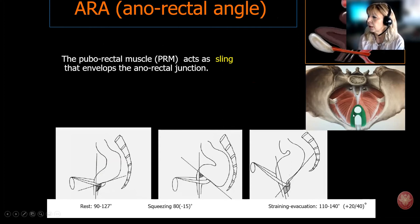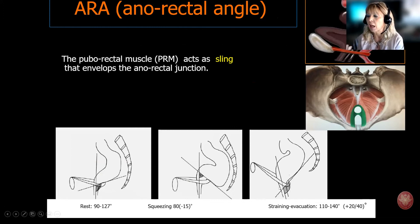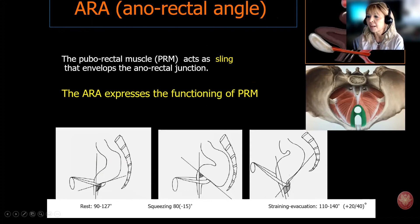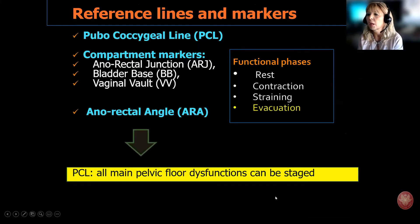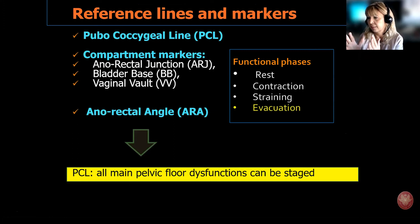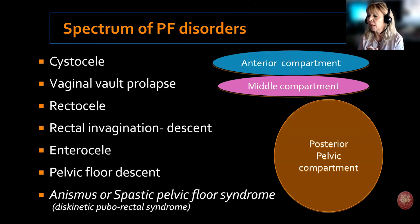Let me spend a few words on the anorectal angle, which is placed between the posterior wall of the rectum and the central axis of the anal canal, and is very easily drawn on MRI images. At rest it is 90 degrees. It is important because it expresses the functioning of the puborectal muscle — a sling that envelops the anorectal junction. Its tonic contraction maintains continence at rest, and its contraction impedes urgent evacuation, whereas it must relax completely during defecation. Here you see examples from MRI and conventional defecography showing variation of this angle at rest, contraction, and during straining.